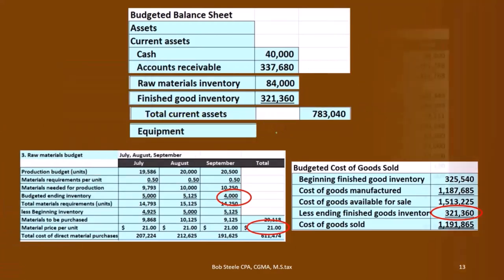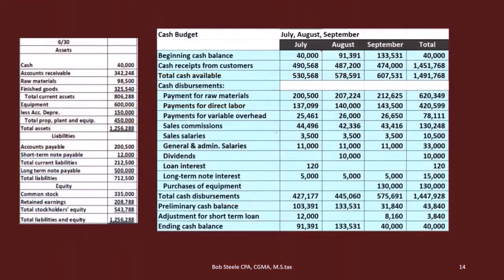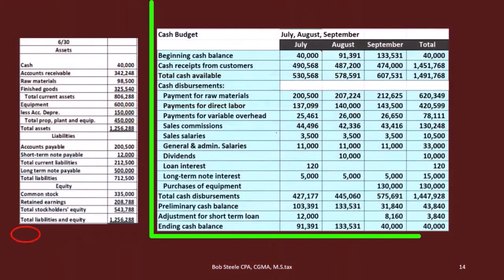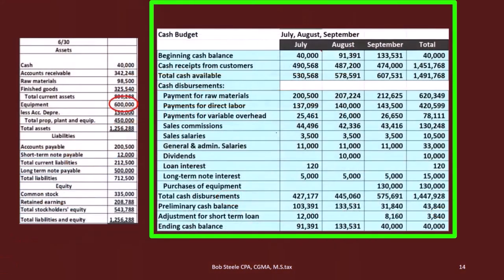Then we're going to have equipment — property, plant, and equipment. We can get that from the relevant budget as well.